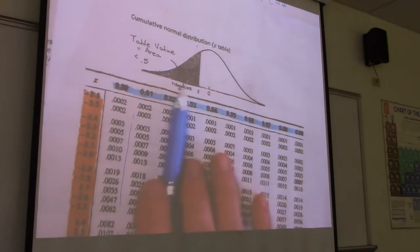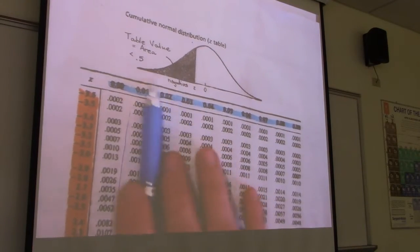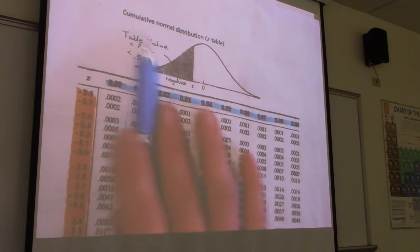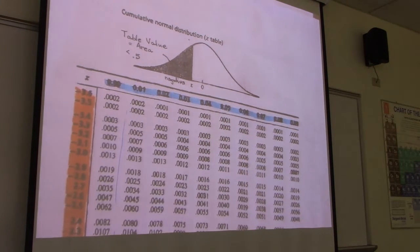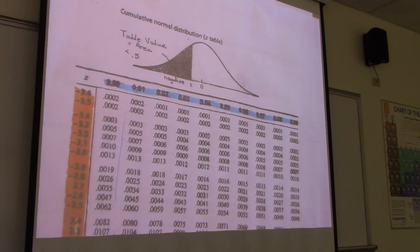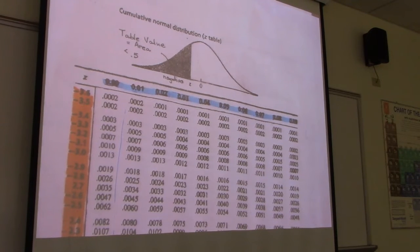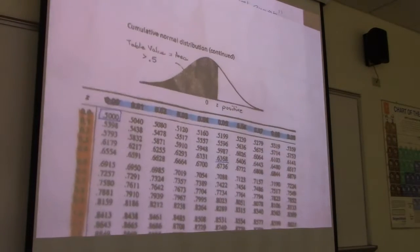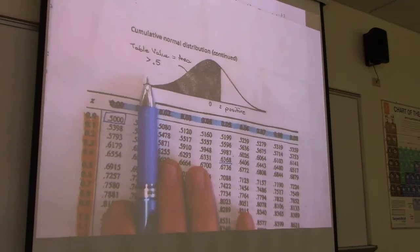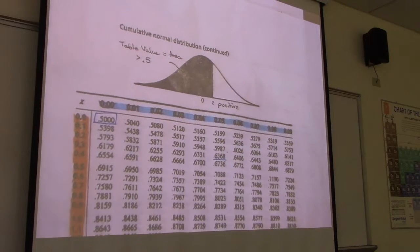Remember, we've got negative Z scores, table area less than 0.5. Isn't that nice? On the test, I think they'll actually write that. Table value area equals area less than 0.5. So we know I'm on the wrong side because my table value is going to be over 0.5 because my Z score is positive.